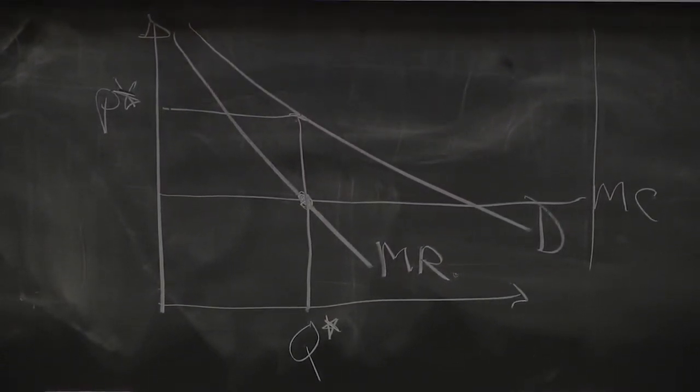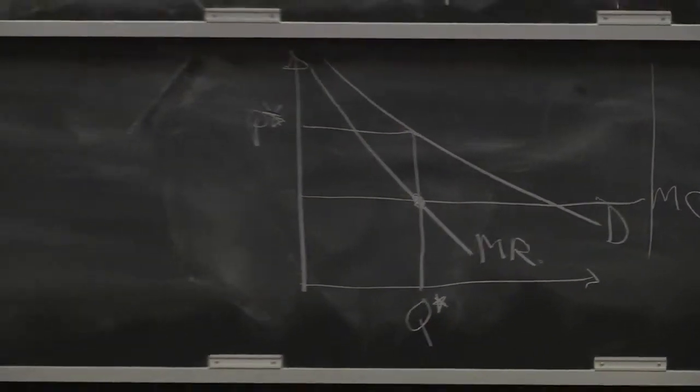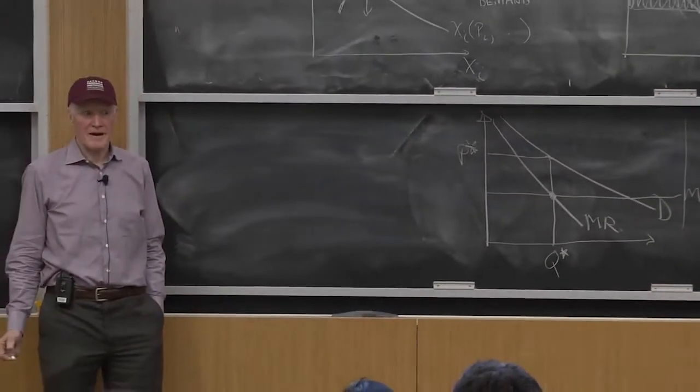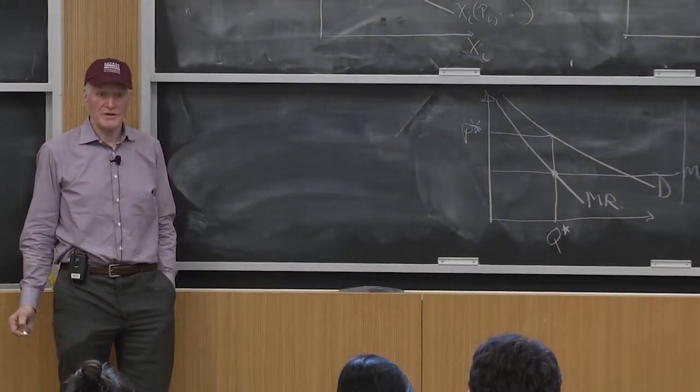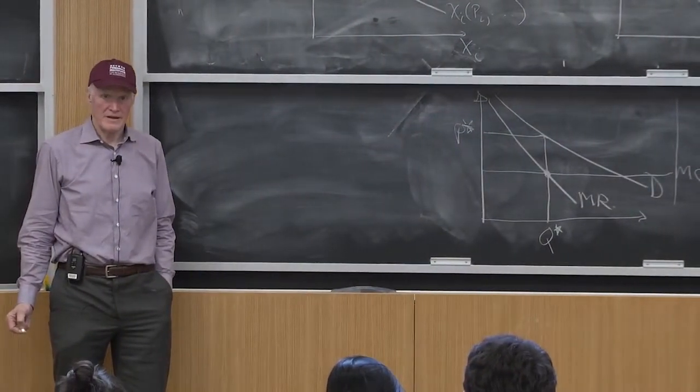Now, what does the monopolist's indifference curve look like in this space? What do his indifference curves look like? Think about it. He's maximizing subject to what constraint in this problem?